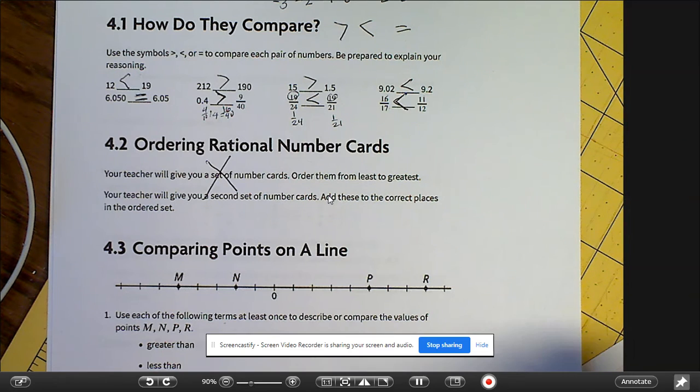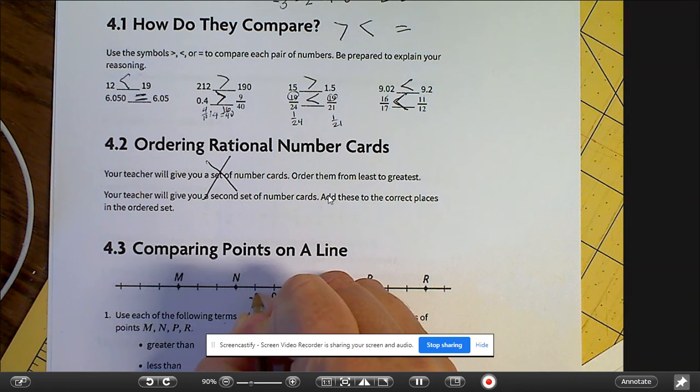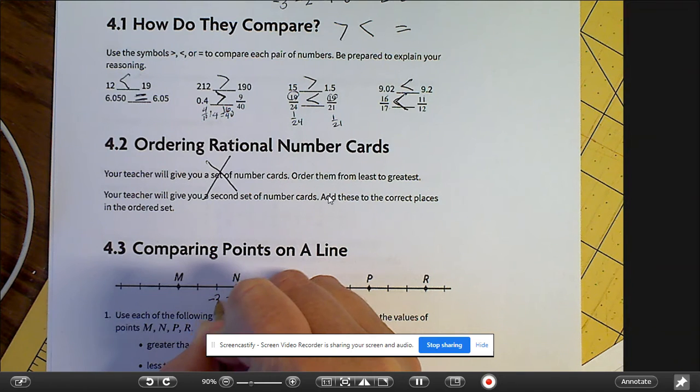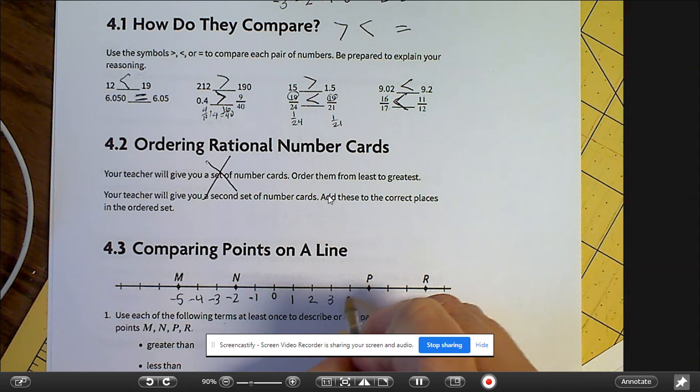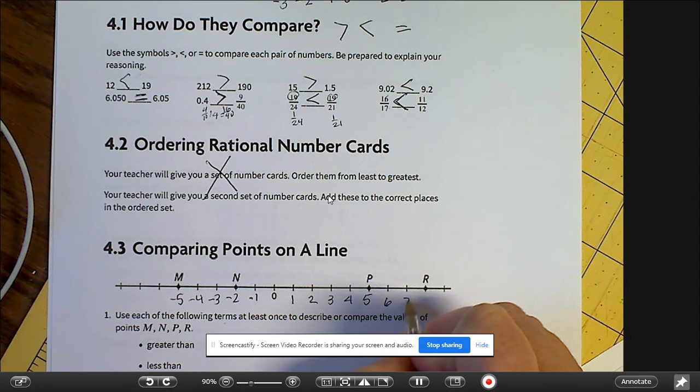So if we're going to label this, let's label it negative one, negative two, negative three, negative four, negative five. And then this would be one, two, three, four, five, six, seven, eight.